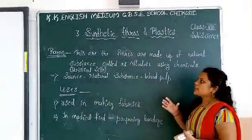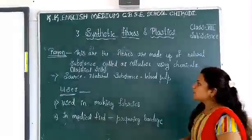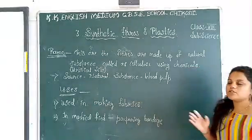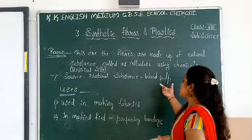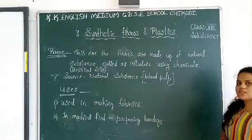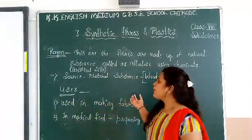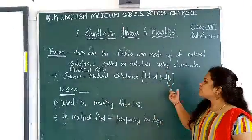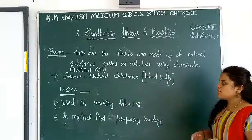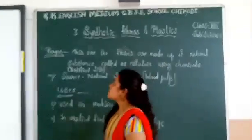Rayon is made from a natural substance called cellulose using chemicals, and it is called artificial silk. The main source of rayon is wood pulp — for example, bamboo. The uses of rayon include many fabrics as well as in the medical field, where it is used to prepare bandages.